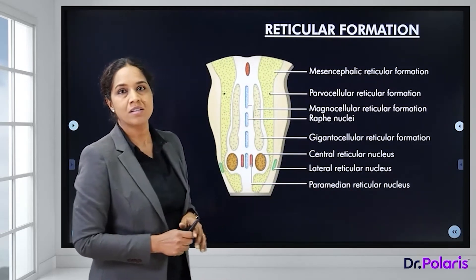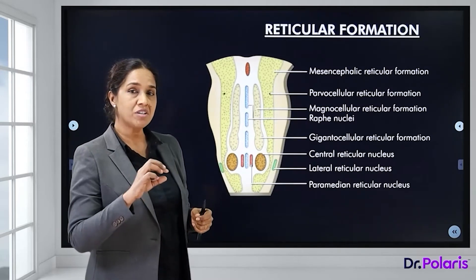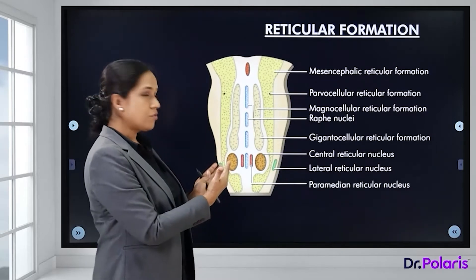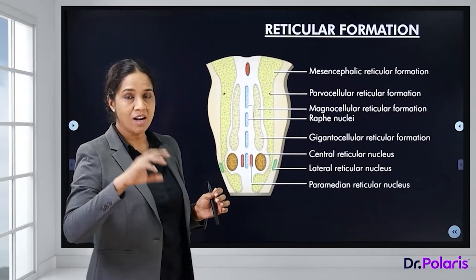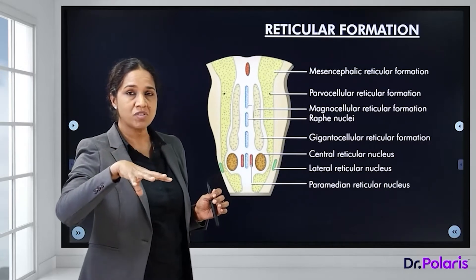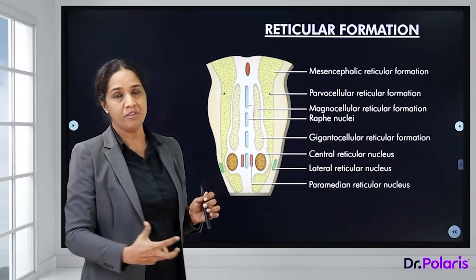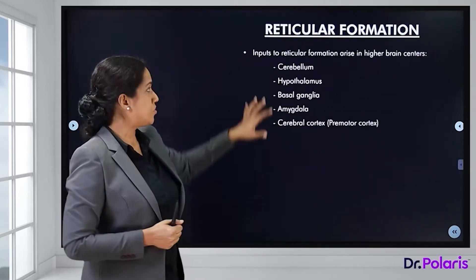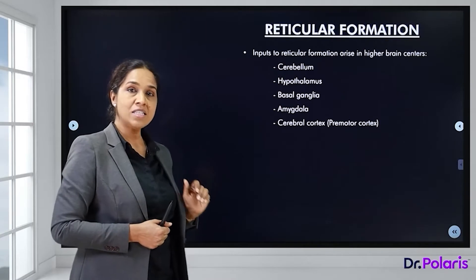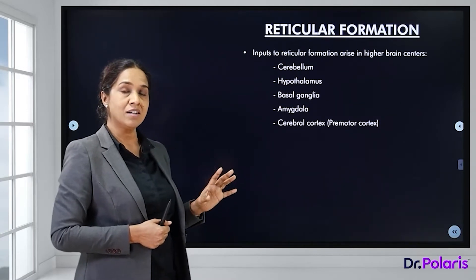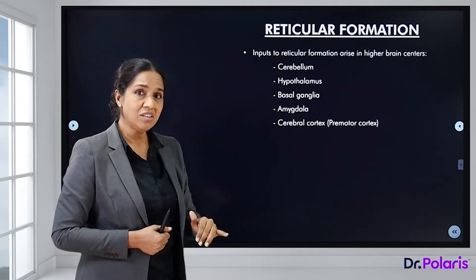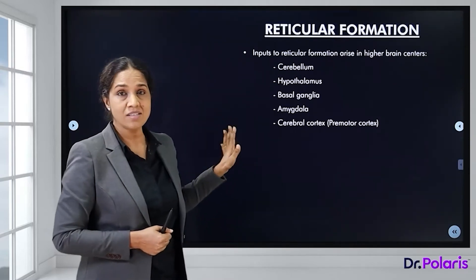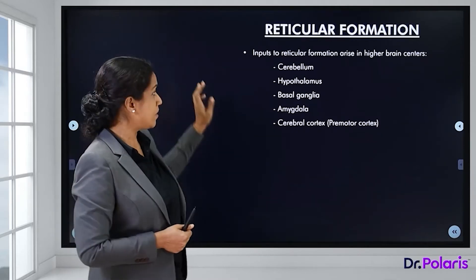Overall, the reticular formation is a diffuse mass of cells that are not clearly defined in reality, even if they appear more defined in diagrams. The inputs to the reticular formation arise from different higher centers — that is, efferent fibers from higher centers reach the reticular formation.